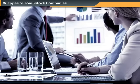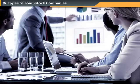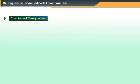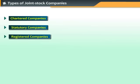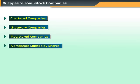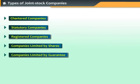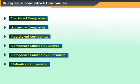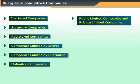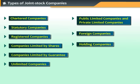There are various types of Joint Stock Companies. Some of these types include Chartered Companies, Statutory Companies, Registered Companies, Companies Limited by Shares, Companies Limited by Guarantee, Unlimited Companies, Public Limited Companies, Private Limited Companies, Foreign Companies, Holding Companies, and Undertaken Companies.